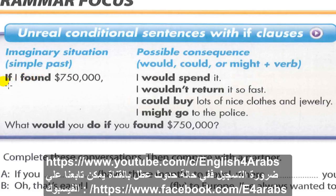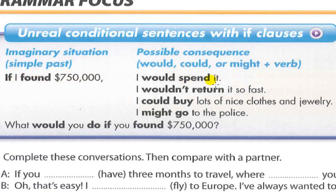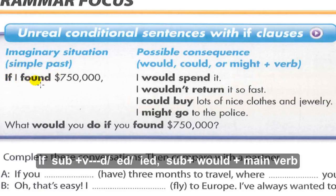Examples: 'If I found $750,000, I could buy lots of nice clothes and jewelry.' 'If I found $750,000, I might go to the police.' 'What would you do if you found $750,000?' In the second conditional: the if-clause uses simple past (verb + -ed / -ied), and the main clause uses: subject + would / could / might + main verb (spend, return, buy, go).